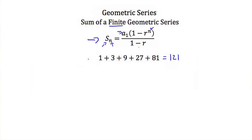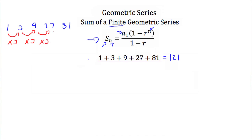Your common ratio is the number that each term is being multiplied by. In this series — 1, 3, 9, 27, and 81 — to go from 1 to 3 we multiply by 3, from 3 to 9 we multiply by 3, from 9 to 27 we multiply by 3, and from 27 to 81 we multiply by 3. This 3 that we multiply by each time is r, our common ratio, and that's what gets plugged into the formula in both locations for r.